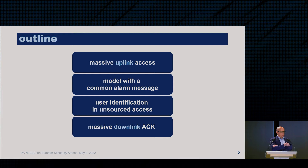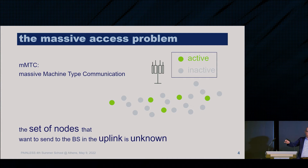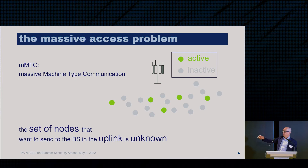Let's start with Massive Uplink Access. This is the classical scenario for Massive Access, where we have Massive Machine-type Communication — one of the three generic services of 5G. The canonical problem is that we have a large set of nodes attached to certain base stations, and at a given time only some of them are active.